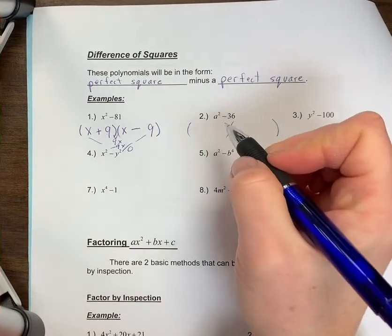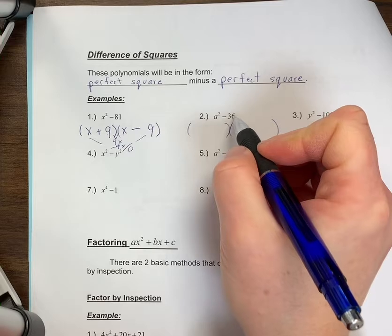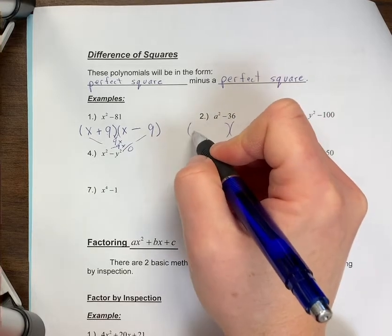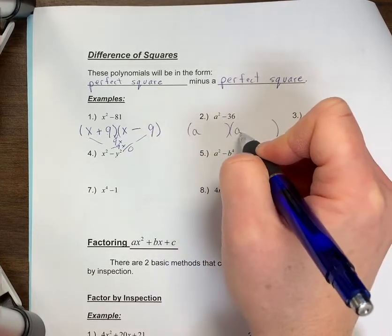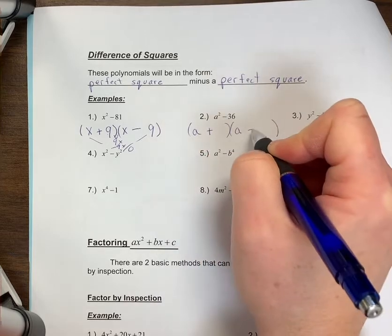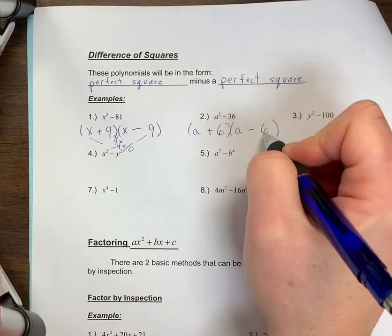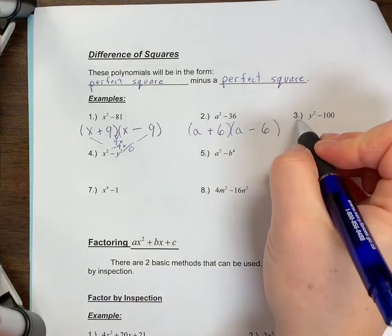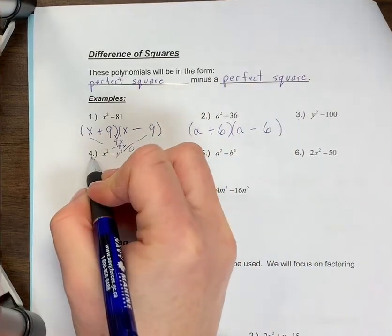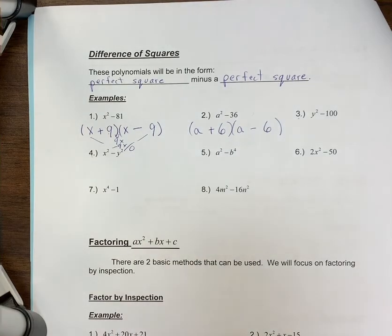For example two, a² - 36. The square root of a² is a times a. My signs are always plus or minus. The square root of 36 is 6. I would like you to try examples three and four before watching the next video.